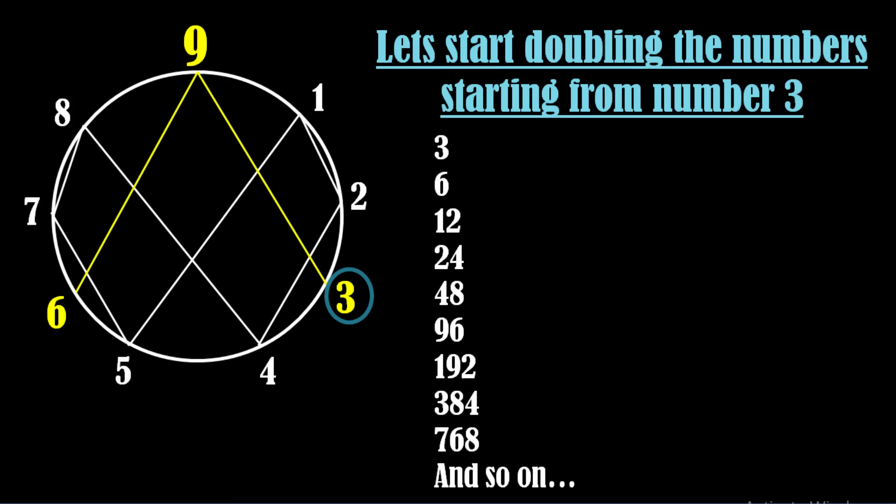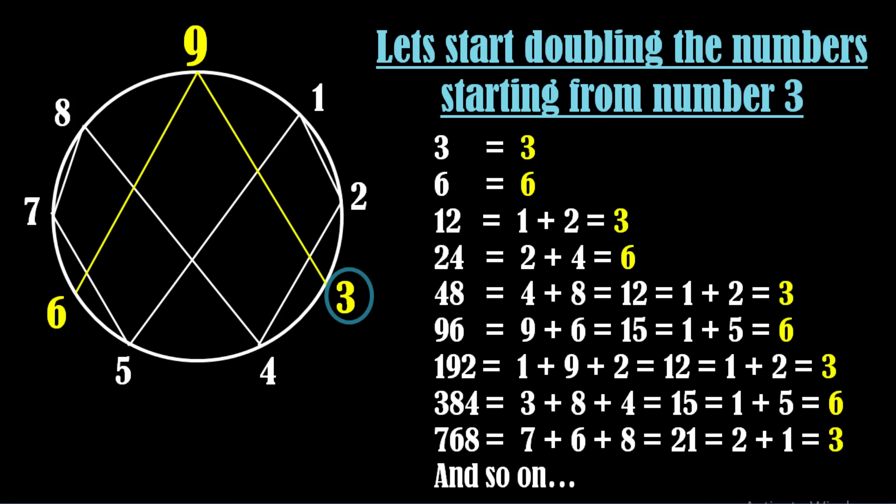But what will happen if we double or half the numbers starting from number 3 or 6? Let's double the numbers starting from number 3. On doubling the previous number, we get the next number. Now find the digital roots of the numbers.